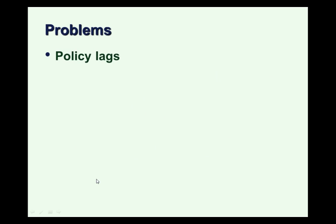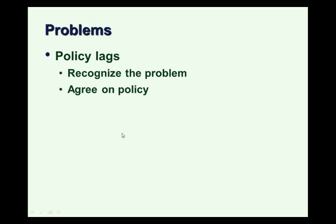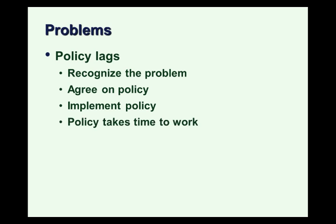Problems — it sounds really easy, doesn't it? Well, when we look at the graph, everything might not be that easy. One issue is how long it takes for aggregate demand to shift. This is a problem with what we call policy lags, and fiscal policy has some pretty long lags. With a policy lag, the President and Congress have to recognize the problem, agree on a policy, implement it — Congress has to vote, the President has to sign it — and then the policy takes time to work. All of that could easily take over a year, after which time the economy could have changed.